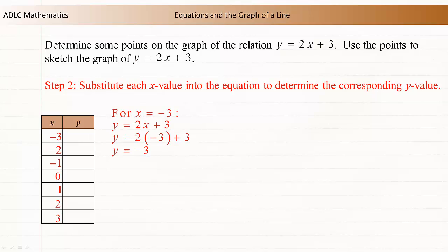Substitute each x value into the equation of the relation to determine the corresponding y value. For x equals negative 3, y equals 2 times negative 3 plus 3, which gives negative 3. Enter this y value into the table.